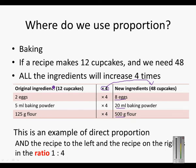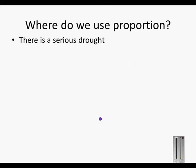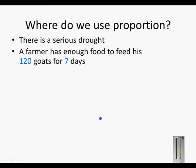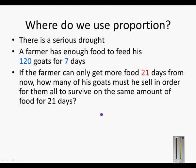The recipe on the left and the recipe on the right are in the ratio 1 to 4. Another example of where we use proportion in everyday life: there is a serious drought. A farmer has enough food to feed his 120 goats for seven days. If the farmer can only get more food 21 days from now, how many of his goats must he sell in order for them all to survive on the same amount of food for 21 days?